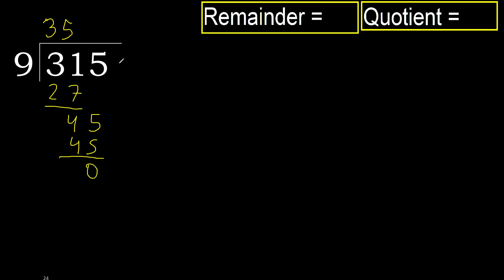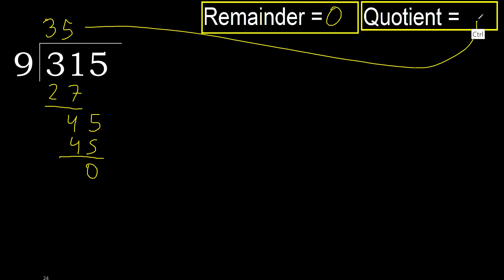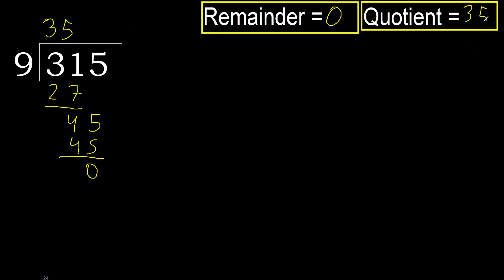Next. That is not a number, therefore finished. 315 divided by 9 is 35.